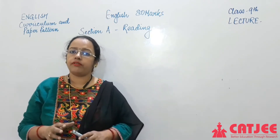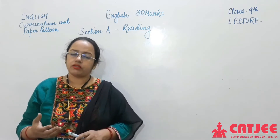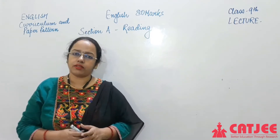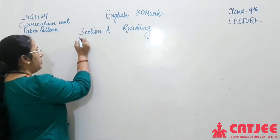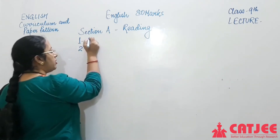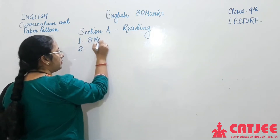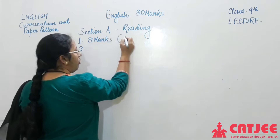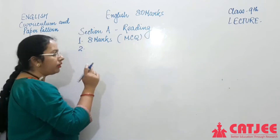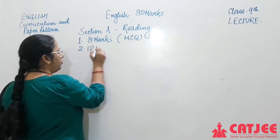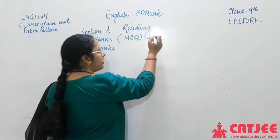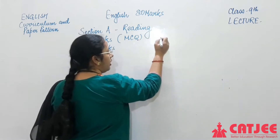Section A is Reading — reading comprehension. Unseen passages are given in Section A. You have done these unseen passages in 8th, 7th, and junior classes too. The pattern is clearly fixed from 9th onwards, as defined by CBSE. Section A has Question 1 and Question 2. Question 1 is of 8 marks with MCQ questions.